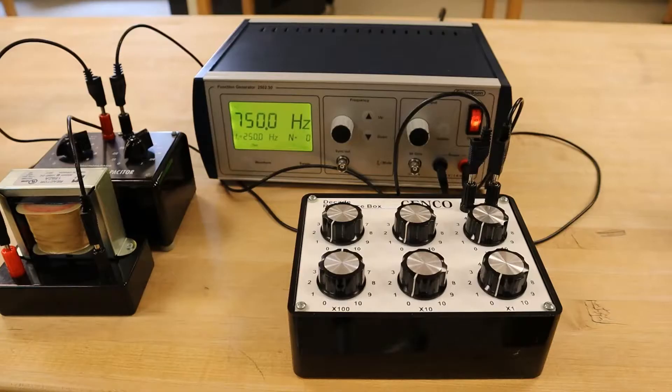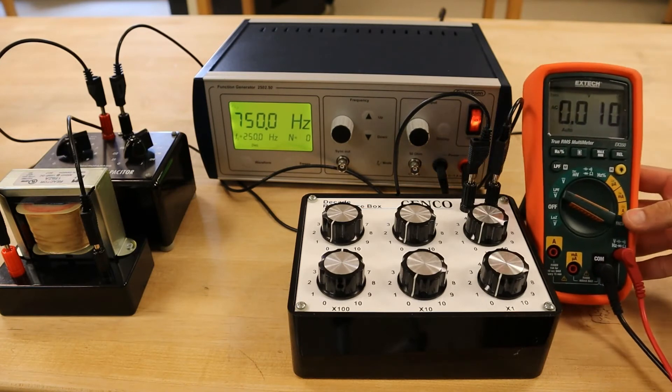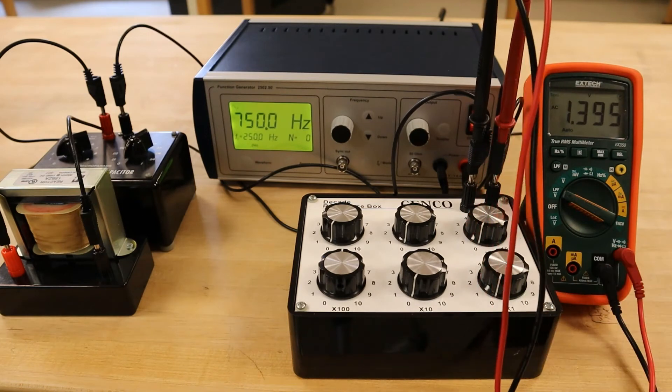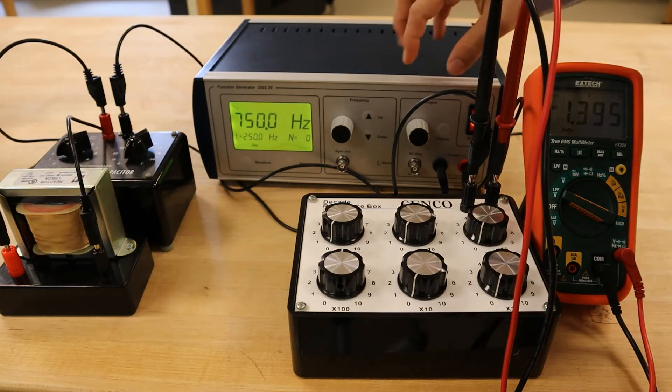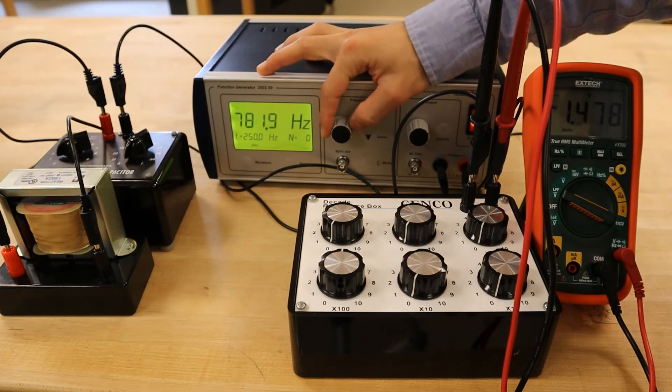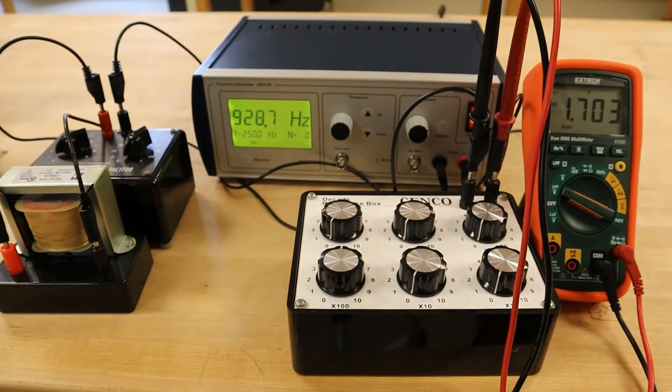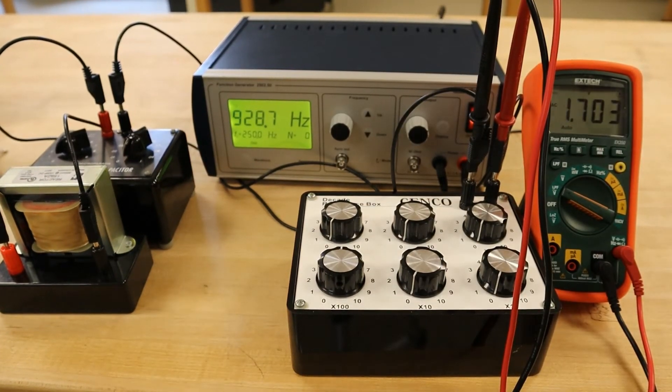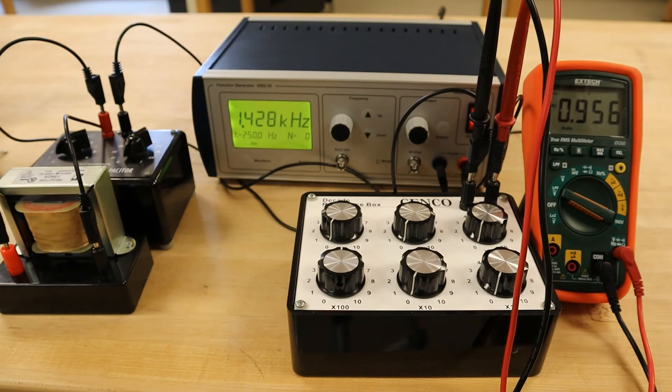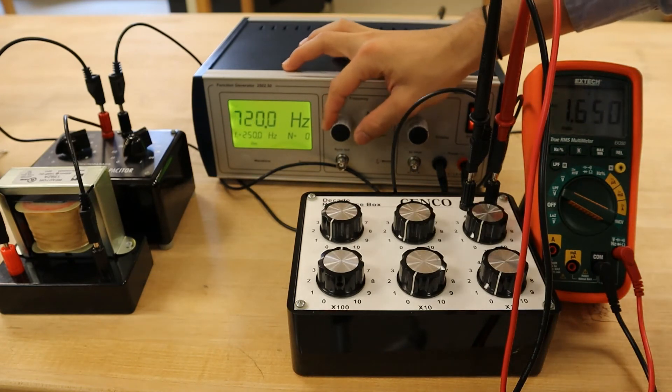For the next part of the procedure, we will leave the DMM test leads placed across the decade resistor. Then we will slowly increase the frequency on the function generator until the voltage determined by the DMM stops increasing. The frequency that correlates to the maximum voltage on the DMM will be considered an experimental value for the resonant frequency of the inductor. We will then adjust the frequency of the function generator for a number of calculated data points between 500 Hz above and below this resonant frequency.